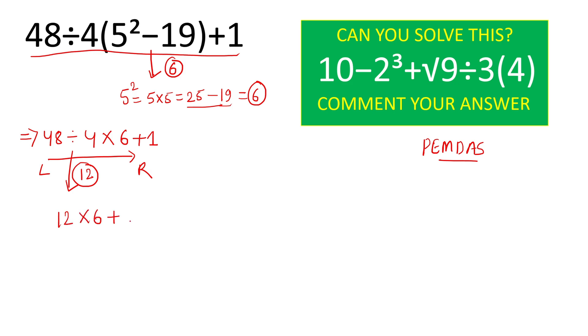And 12 times 6 will give result 72 here. And finally we will write 72 plus 1 as 73, which is the right answer. Now solve this new math question and comment your answer.